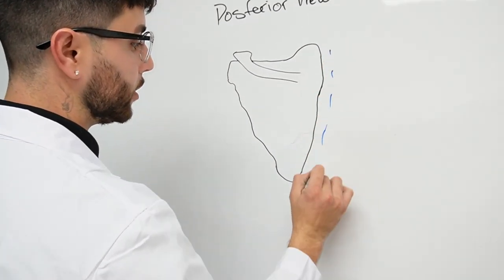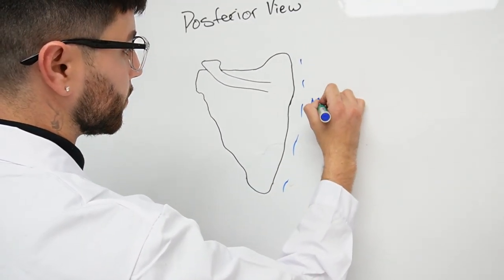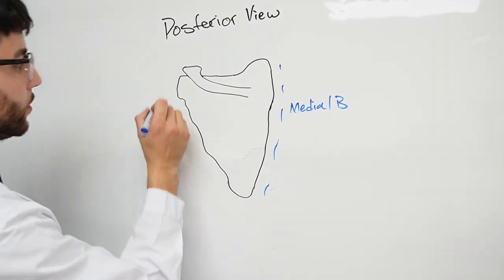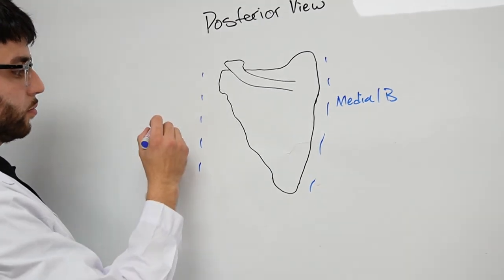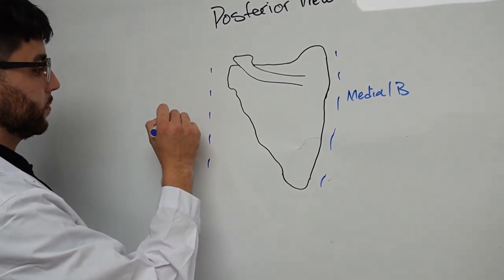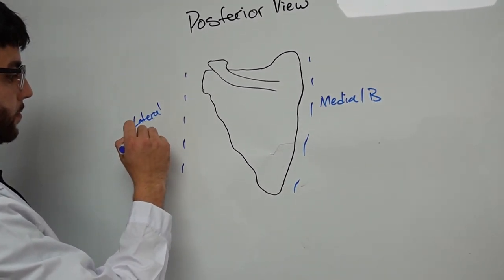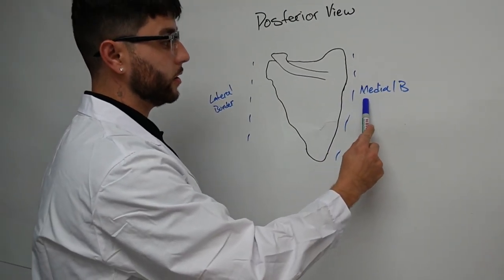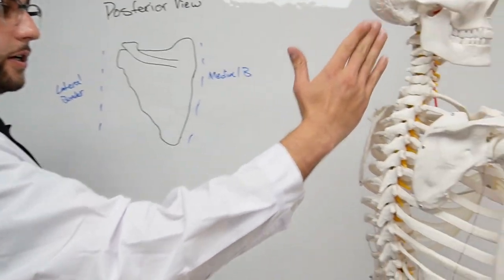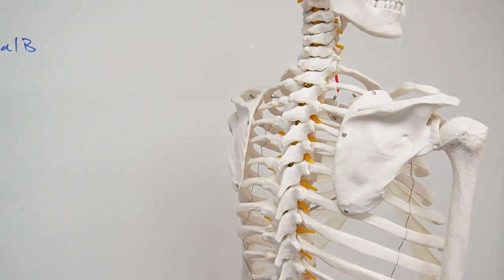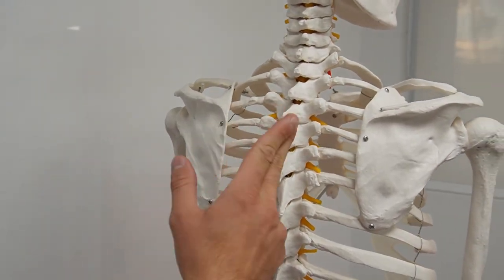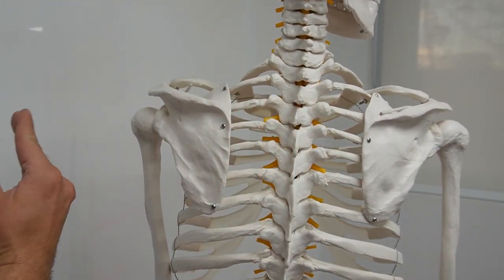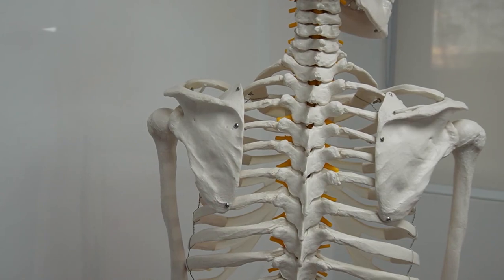You've got the medial border, and then you've got the lateral border. Medial is more toward the midline — this is the medial border, very close to the midline. On the medial side, and then away from the midline, it's called lateral. Anything away is lateral.